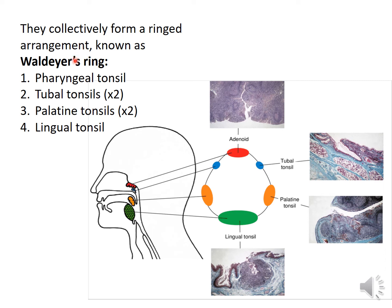That ring-shaped arrangement is called the Waldeyer's ring, formed by four tonsils: the pharyngeal tonsil (adenoid), tubal tonsils (bilateral), palatine tonsils (bilateral), and a lingual tonsil. The pharyngeal tonsil is at the top, tubal tonsils on both sides, palatine tonsils at the sides, and the lingual tonsil at the floor near the base of the tongue.